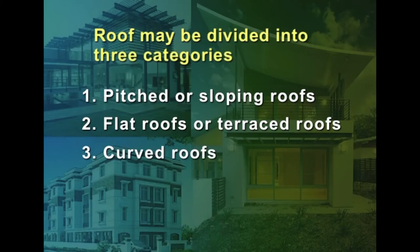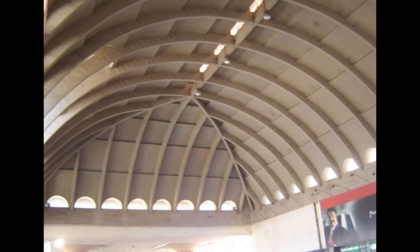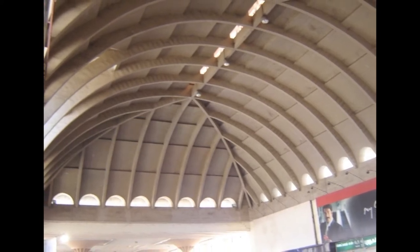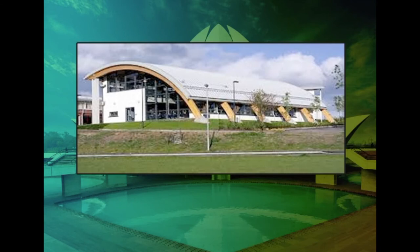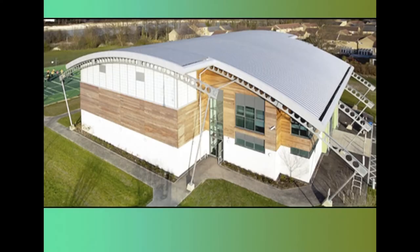Curved roofs are a modification of pitched roofs and are frequently employed in the modern age to cover large areas. Shell roofs and domes are varieties of curved roof and are useful for big structures such as factories and monumental works. Curved roofs may be constructed of timber or RCC.